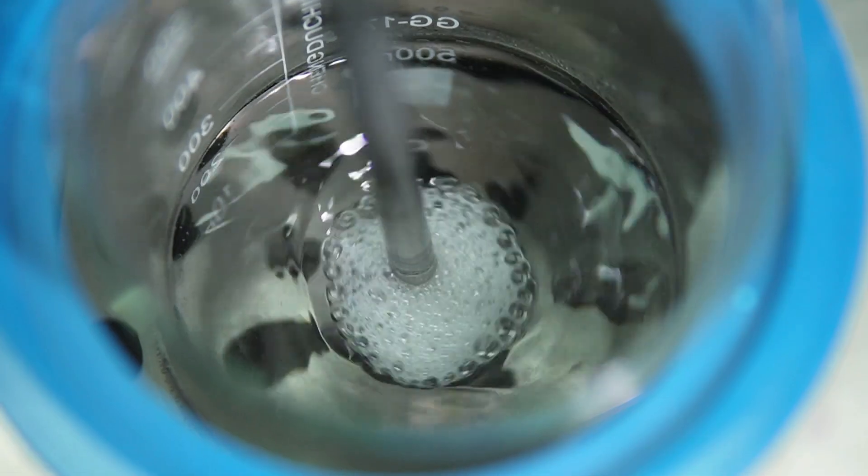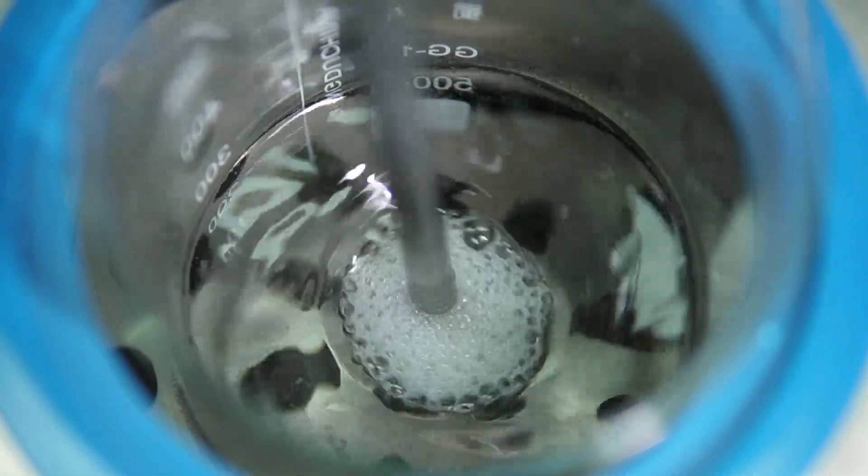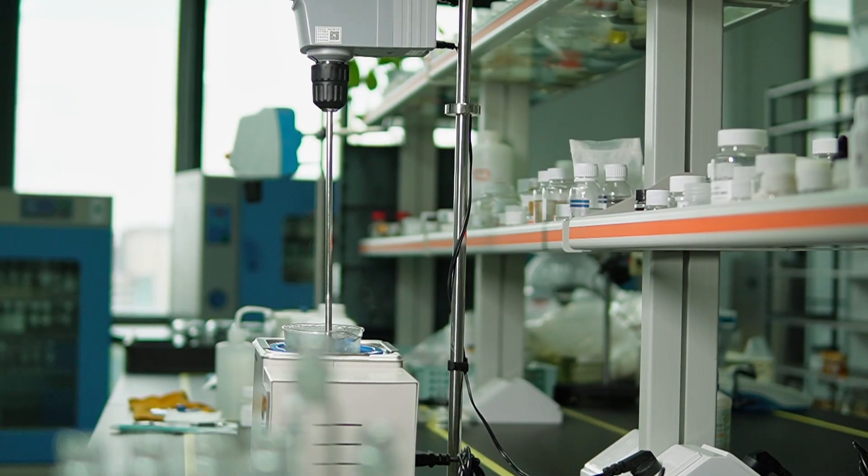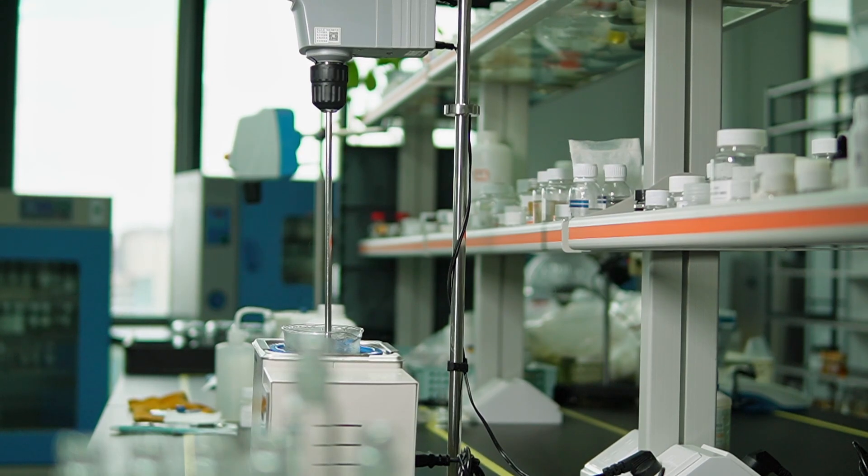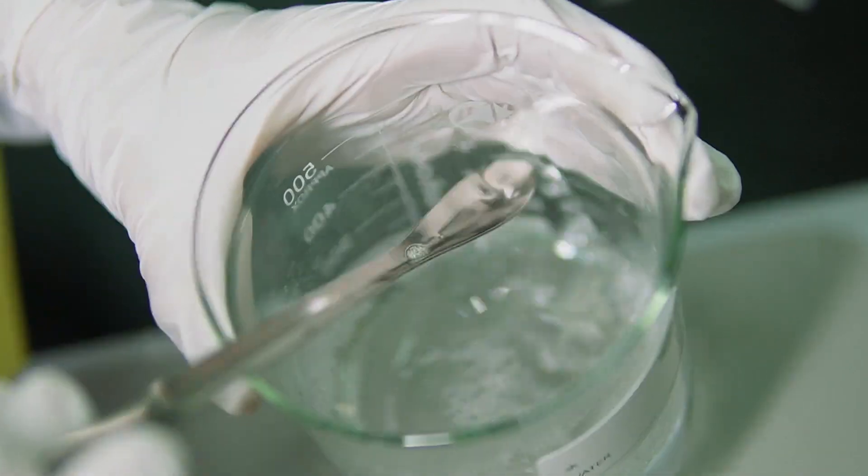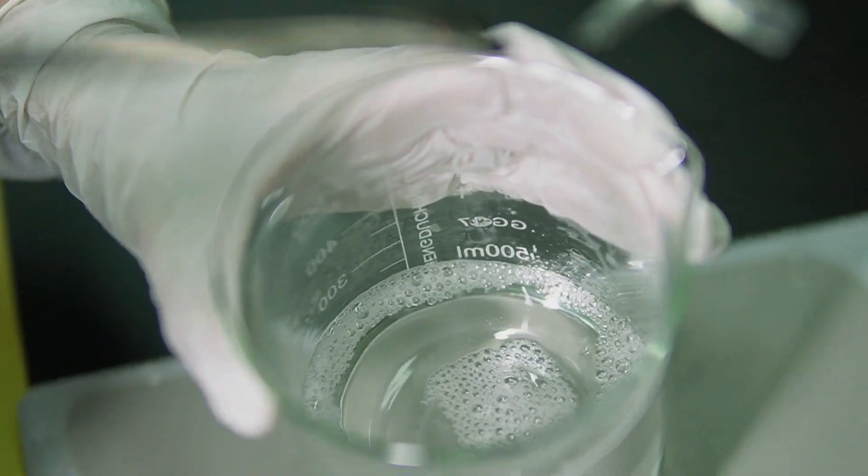This dissolving process is important for the effectiveness of our bath gel. In an industrial setting, we'd use a homogenizer with a heating interlayer to make this process more efficient. But today, we'll be patient, stirring and heating for about 10-15 minutes until the SLES is fully dissolved.